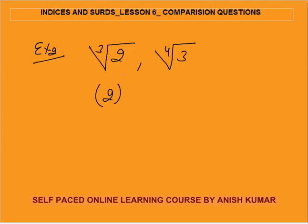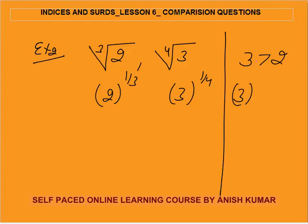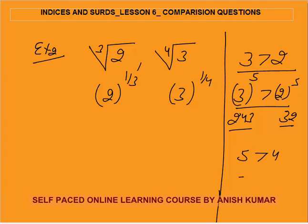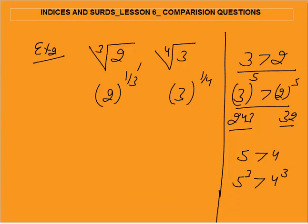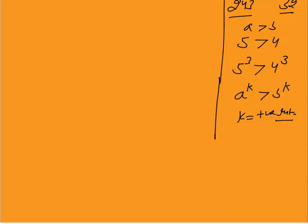The next example is to compare 2 raised to the power 1/3 and 3 raised to the power 1/4. It's very difficult to find the cube root of 2 or the fourth root of 3. We apply some common sense: 3 is greater than 2, and 3 raised to any positive power will always be greater than 2 raised to that same power. If A is greater than B, then A^k will be greater than B^k, where k is a positive integer.